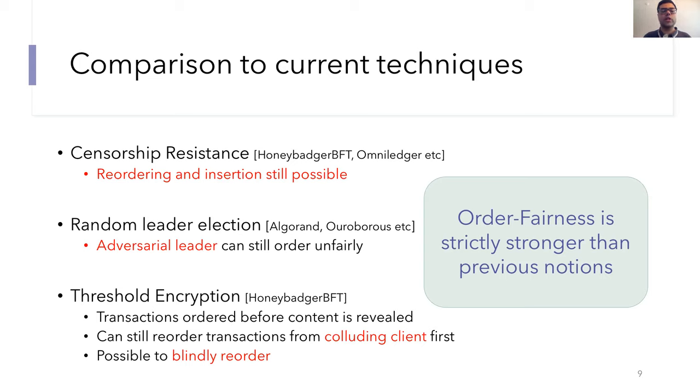Another line of work has focused on electing the leaders randomly so you don't give a particular leader too much power. So let's say a leader is elected at every round and then for that round, the leader is responsible for the proposal. But here, adversarial leaders will also get elected every now and then. And whenever they are elected, they can manipulate the ordering at will.